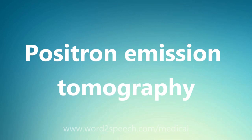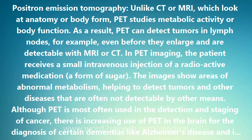Positron emission tomography. Unlike CT or MRI, which look at anatomy or body form, PET studies metabolic activity or body function. As a result, PET can detect tumors in lymph nodes, for example, even before they enlarge and are detectable with MRI or CT.